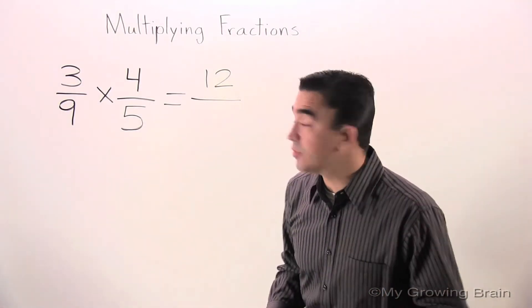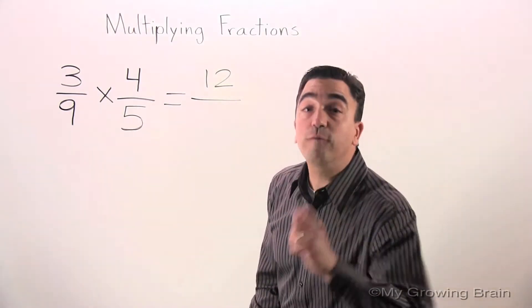Let's move to the denominators. 9 times 5 equals 45.